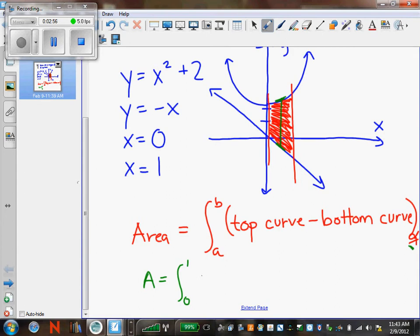My top curve is x squared plus 1. I'm sorry, x squared plus 2 and you subtract the negative x. You can plug that in your calculators to get the area and it'll be 17 over 6.